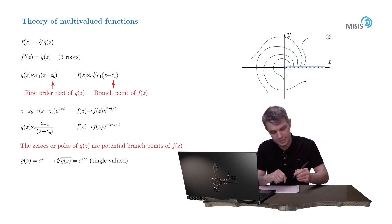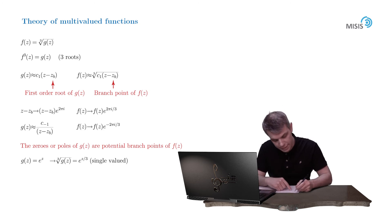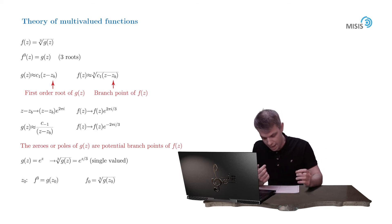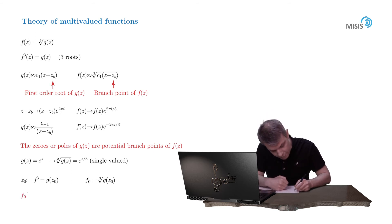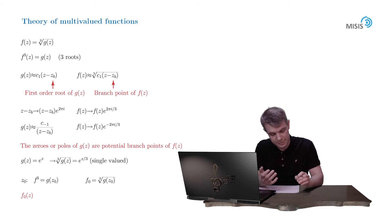So here is how it's done. Let's denote this reference point as z naught. And then the definition of our function at this point: f cubed is equal to g of z naught. So let's pick up some value like f naught as a cubic root of g of z naught. And here goes the statement: there exists a unique regular branch of function f, let's call it f naught z, such that it coincides with the value f naught at point z naught.